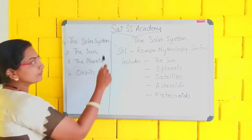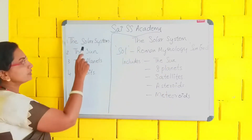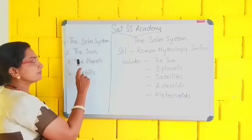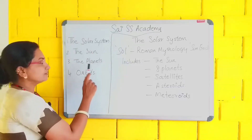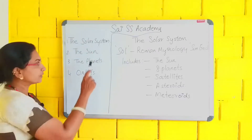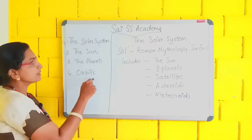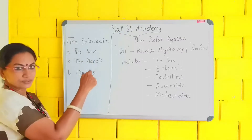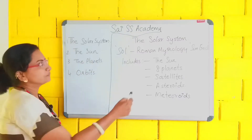Today we are going to cover these topics: the solar system, the sun, the planets, and the orbits. These things I am going to explain you.